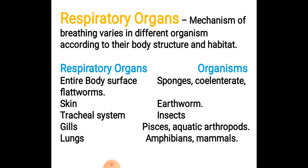Spiracles are present on the body surface through which exchange occurs. In pisces and aquatic arthropods, gills are found as the respiratory organs. All aquatic animals that are found in water use gills as their respiratory organs.